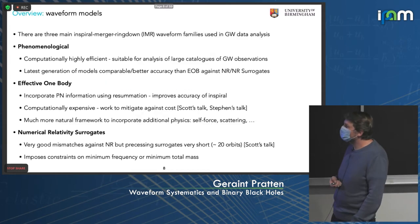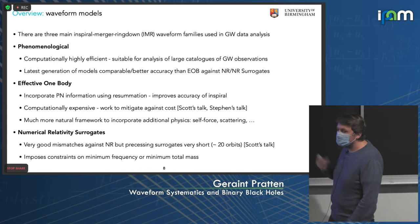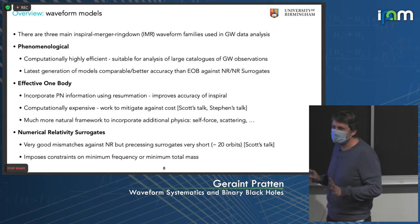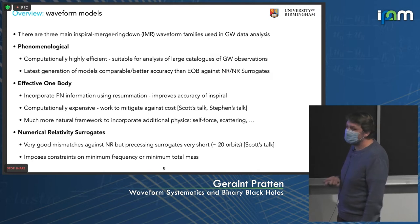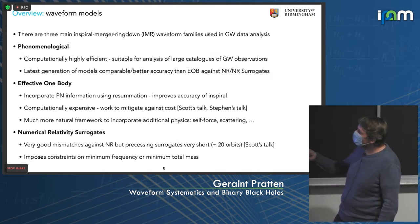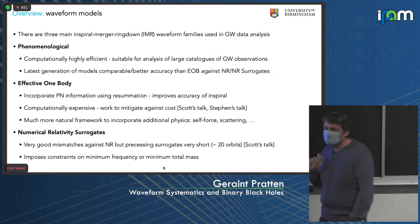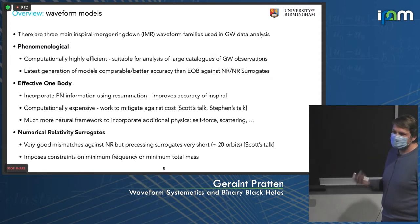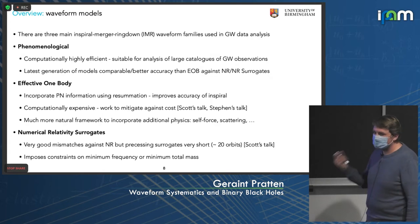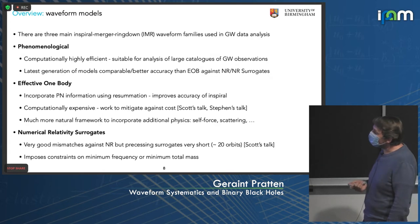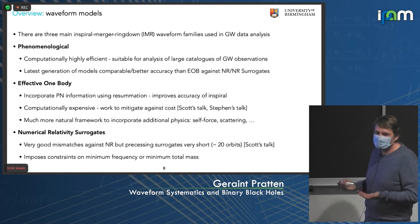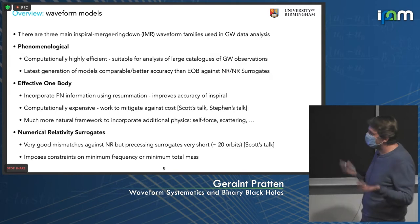For inspiral-merger-ringdown waveform models, we have three main families. The first is phenomenological waveform models. These are computationally extremely efficient — partly because they're constructed in the frequency domain directly, so we really model a gravitational wave signal in the frequency domain. A lot of gravitational wave data analysis operations are natively performed in the frequency domain, such as mismatch calculations, inner products, and so forth.